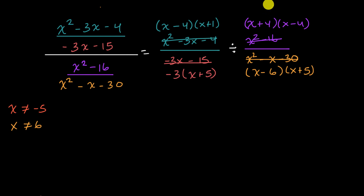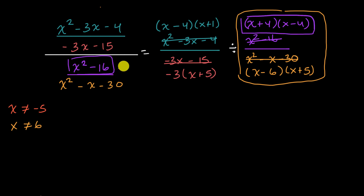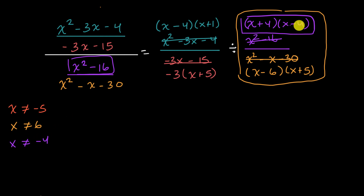But we're not done. We've figured out the x values that make these denominators equal to zero. But remember, we're also dividing by this entire expression, so anything that would make the entire expression equal to zero is also a problem, because you can't divide by zero. Anything that would make this numerator — which was the numerator of the divisor — equal to zero would also make us divide by zero. So we can see that x cannot be equal to negative 4, and x cannot be equal to positive 4. Now we've fully constrained our domain.